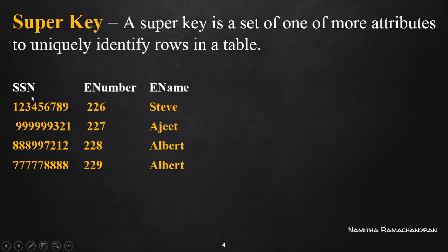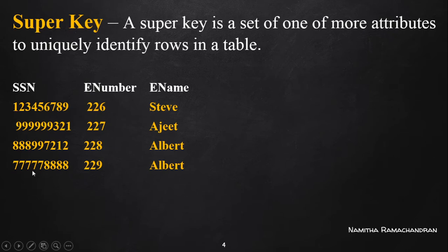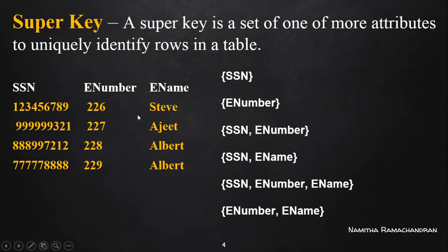The employee table has attributes: Social Security Number (SSN), Employee Number (E Number), and Employee Name (E Name). Each row represents the record of a particular employee. From this table, we can identify the various super keys possible.